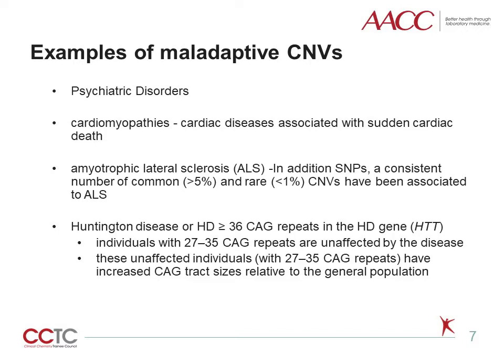Huntington disease, or HD, is a dominantly inherited neurodegenerative disorder where CAG repeats occur more than 36 times in the Huntington gene. The small CAG repeat length associated with the Huntington phenotype has a count of about 36, but repeat lengths of 36 to 39 CAG have been found in asymptomatic elderly individuals. Individuals with 27 to 35 CAG repeats are unaffected by the disease, though they have increased CAG tract sizes compared to the general population.